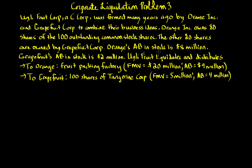Hello. In this video, we're continuing with our corporate liquidation discussion looking at the corporate tax consequences. This is corporate liquidation problem three. So Ugly Fruit Corp, a C corporation, was formed many years ago by Orange, Inc. and Grapefruit Corp to combine their business ideas.